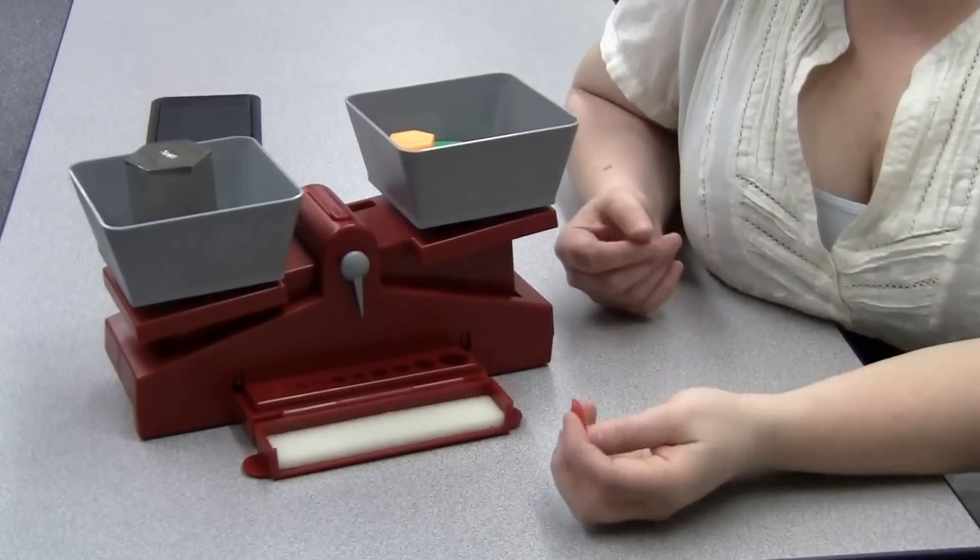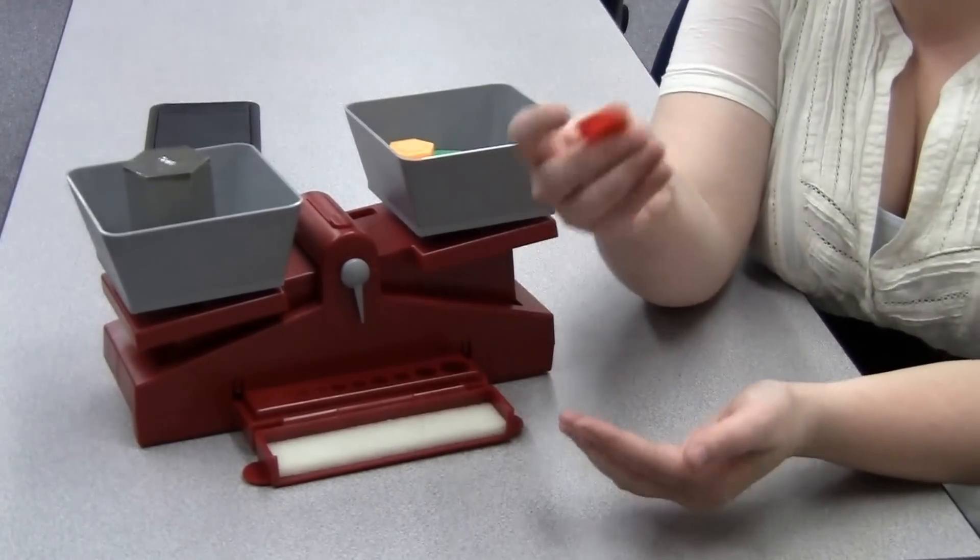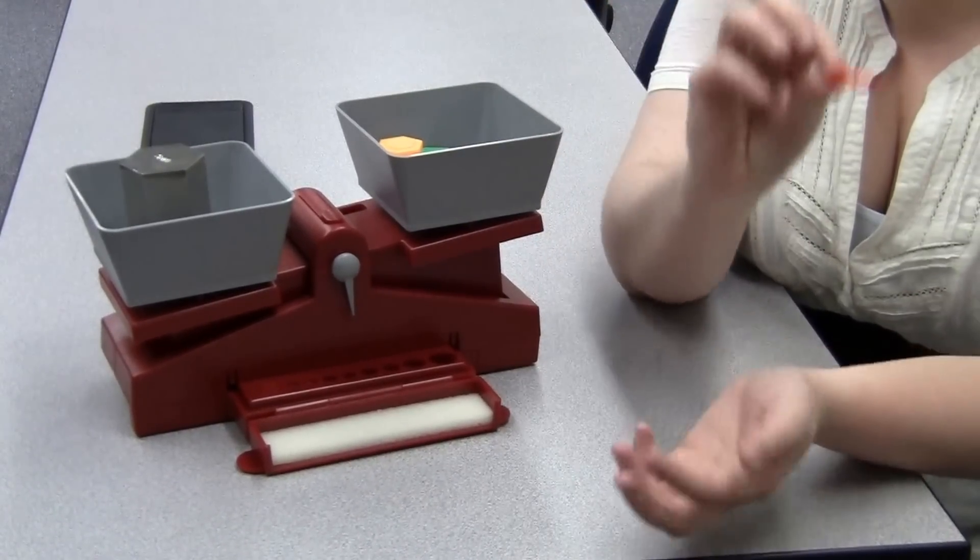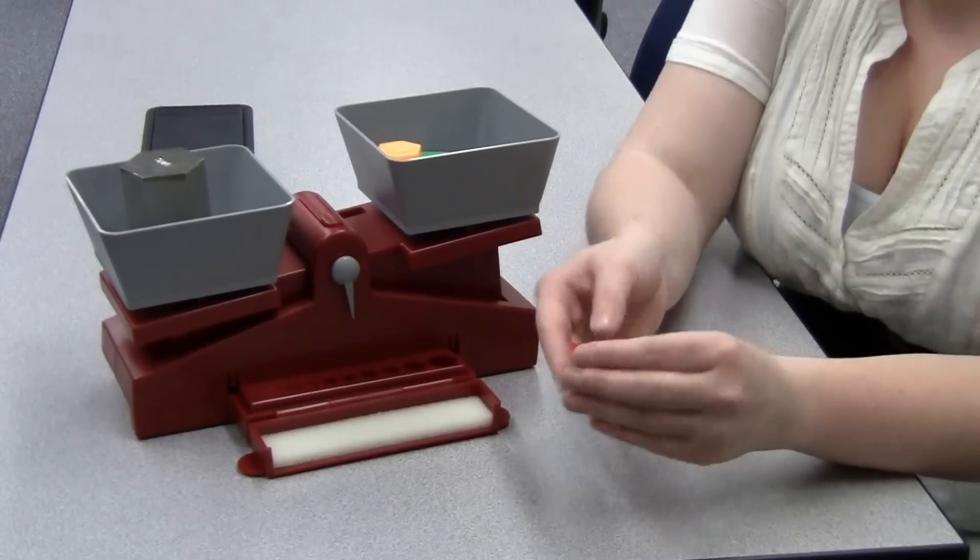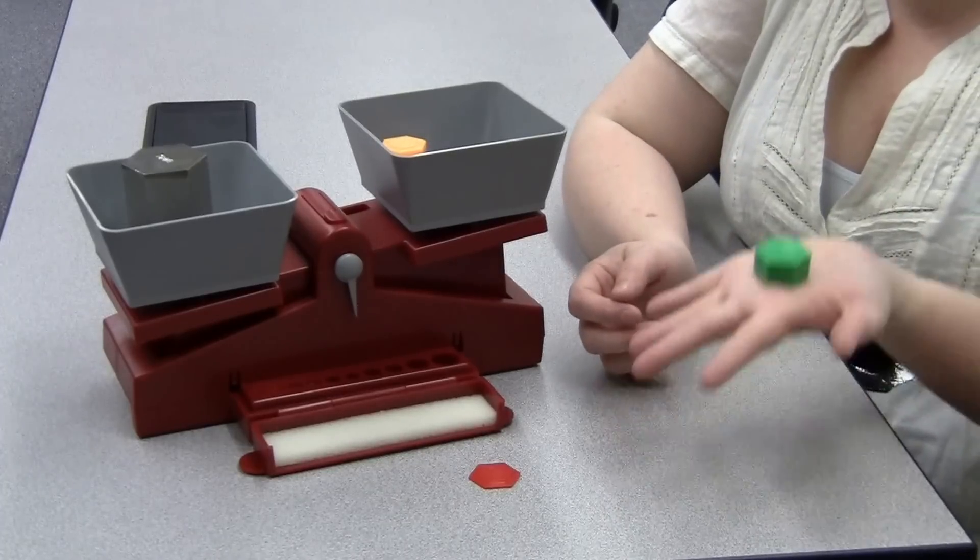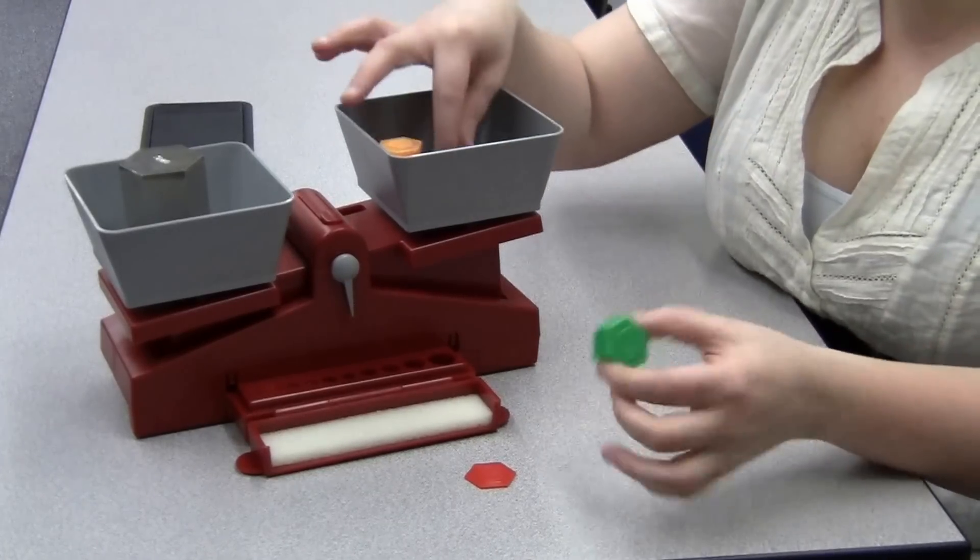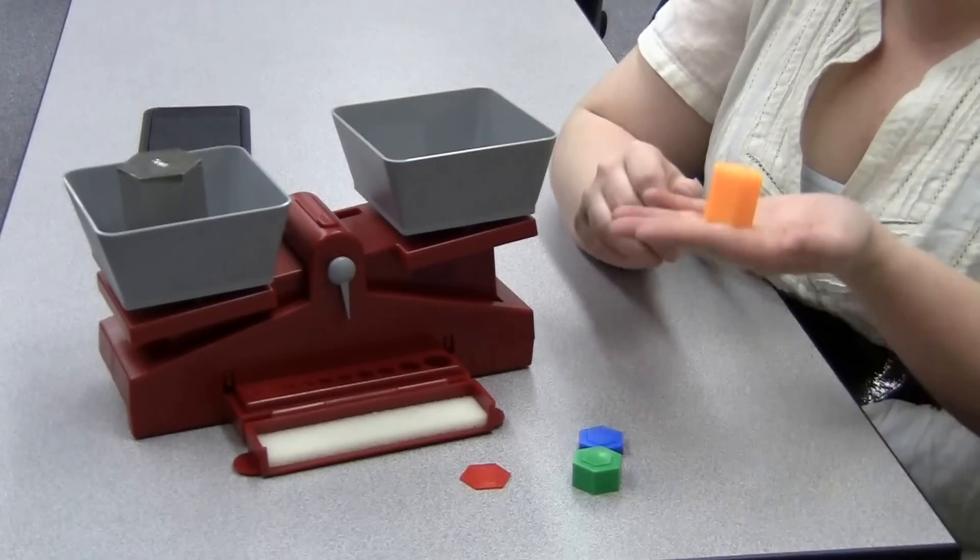One thing you could do to teach in your classroom with grams is have the children fill it and then try to find something in the classroom that is similar to weight. Like for one gram you would probably find a paper clip, and then for 10 maybe a pencil cap or a pen cap or a pencil. The same can be said with the 5, and then the 20, it's a little heavier, so it may be kind of like a bouncy ball.